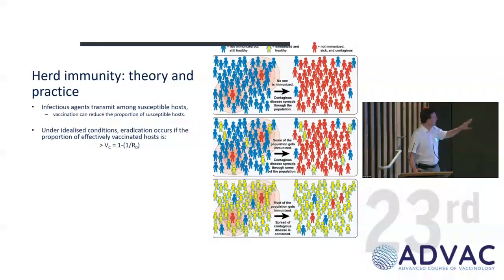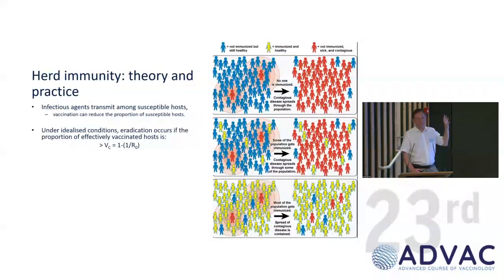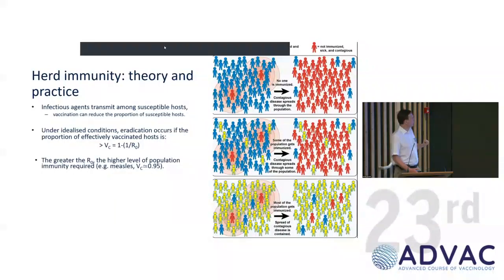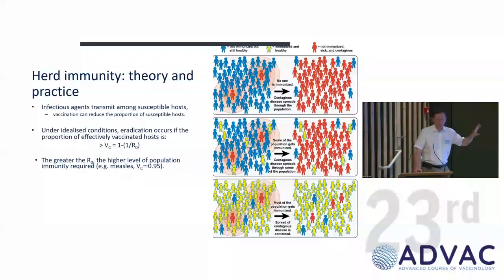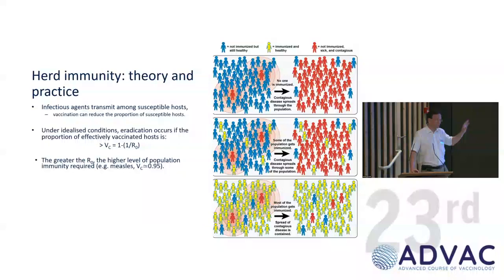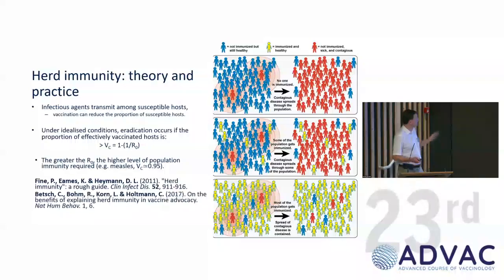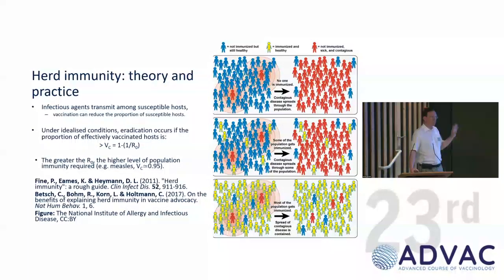Under ideal conditions, we can calculate the vaccination critical threshold, which is 1 minus 1 over R0 — this magic number that tells you the proportion of vaccinated people you need to achieve immunity. If you achieve that threshold, the pathogen will die out. The greater the R0, the more difficult it is to achieve. This is why measles remains a problem: although we have good vaccines and good vaccination rates, the critical level is about 95% because the R0 is about 16 to 20. It's tough, but doable. Of course, it also depends on the model behaving as expected — like a really well-mixed population.